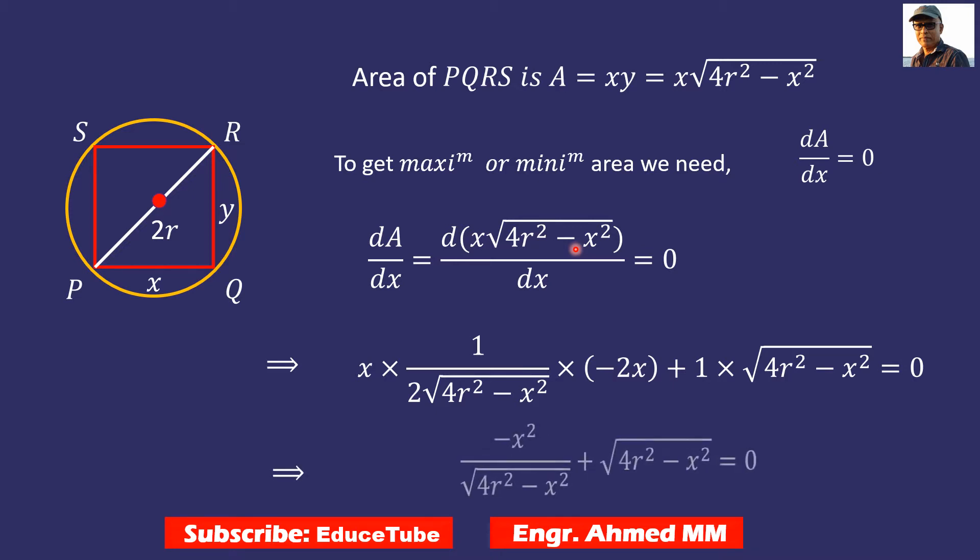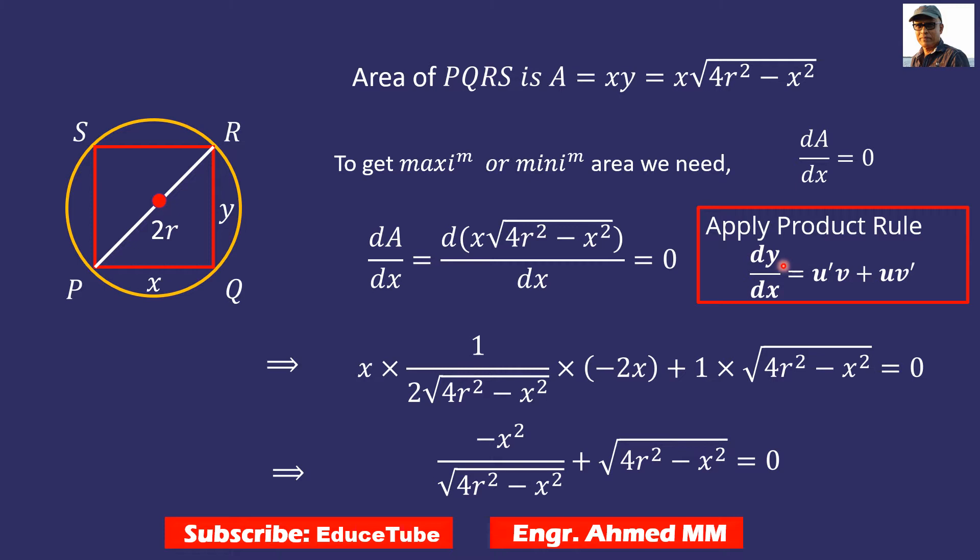To differentiate a product of functions u and v, where y = u·v, we have dy/dx = (du/dx)·v + u·(dv/dx). The exact same rule we have to follow for this because here also there are two functions.